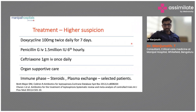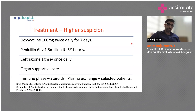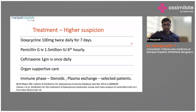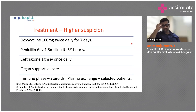Treatment: with a high suspicion, start IV doxycycline 100 mg twice daily for seven days — this can be extended to ten or fifteen days. Ceftriaxone 1 gram IV once daily is an alternative. Organ supportive care is essential.